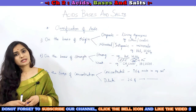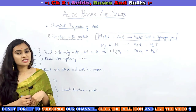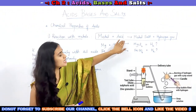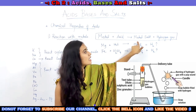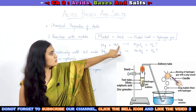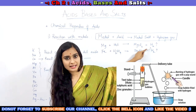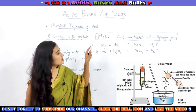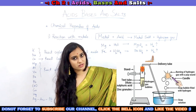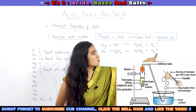Now let us discuss the chemical properties of acids. The first property is the reaction with metals. When a metal reacts with an acid, it will produce its respective metal salt along with the liberation of hydrogen gas. For example, when magnesium reacts with hydrochloric acid, it forms magnesium chloride salt along with the liberation of hydrogen gas. Also, when iron reacts with H2SO4 (sulfuric acid), iron sulfate is formed along with the liberation of hydrogen gas.